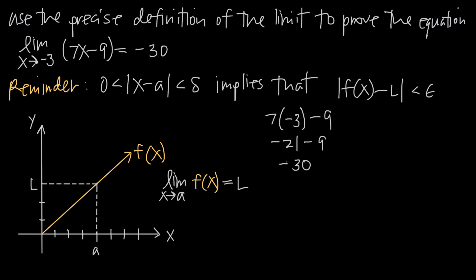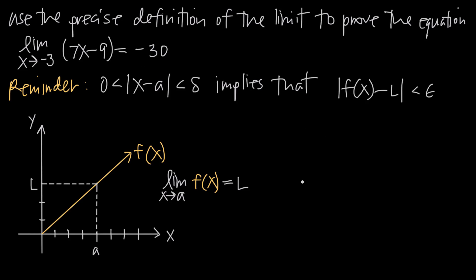So the limit as x goes to negative 3 of this function is negative 30. Using substitution confirms this: when f(x) = 7x − 9, as x gets really close to negative 3, the value of f(x) gets really close to negative 30. Because substitution works here, when x equals negative 3, f(x) equals negative 30. But how do we use the precise definition of the limit to prove that?